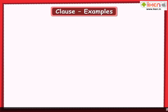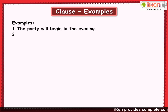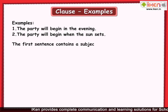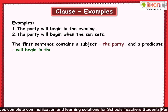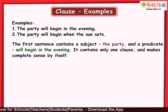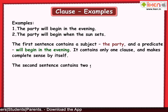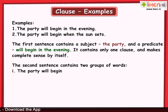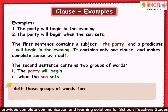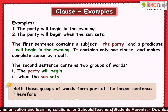Let's look at the following examples. 'The party will begin in the evening.' 'The party will begin when the sun sets.' The first sentence contains a subject, 'the party,' and a predicate, 'will begin in the evening,' hence it contains only one clause. The second sentence contains two groups of words: 'the party will begin' and 'when the sun sets.' Both these groups of words form part of the larger sentence, and are therefore called clauses.